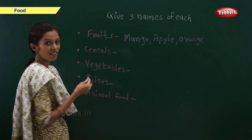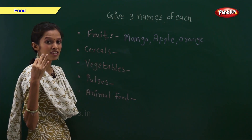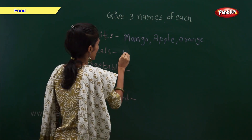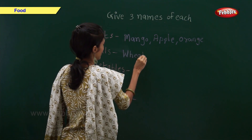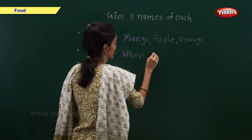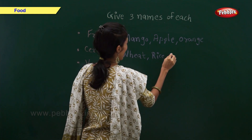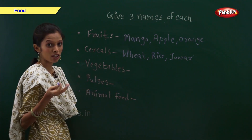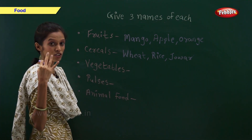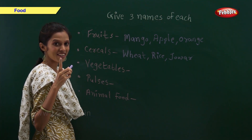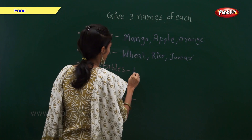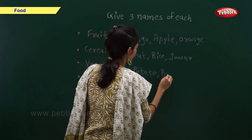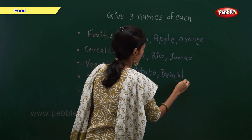Now give three examples of cereals. Do you remember? I have shown you. Yes — wheat, rice and jowar. Give me three examples of vegetables. Remember, I told you earlier. Yes — potato, brinjal and tomato.